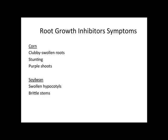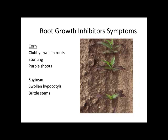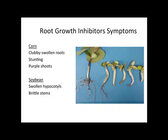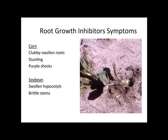In corn we have the clubbed swollen roots, the stunting and purple shoots, and in soybeans we have the swollen hypocotyl and brittle stems. We can see the nice clubbed swollen roots, the purple shoots, the swollen hypocotyl in soybean, and the brittle stem.